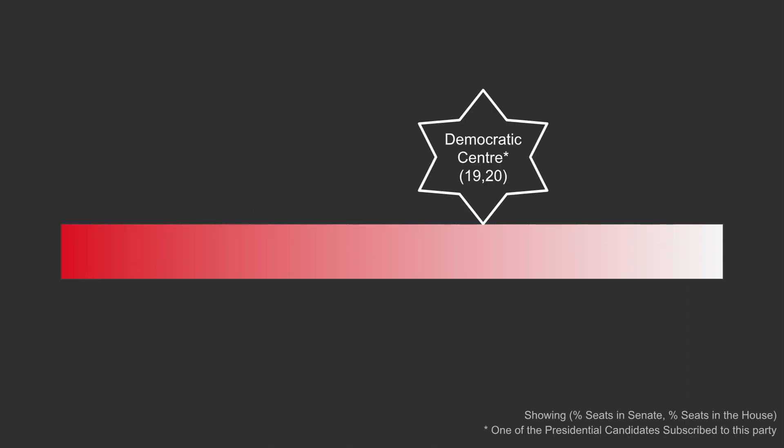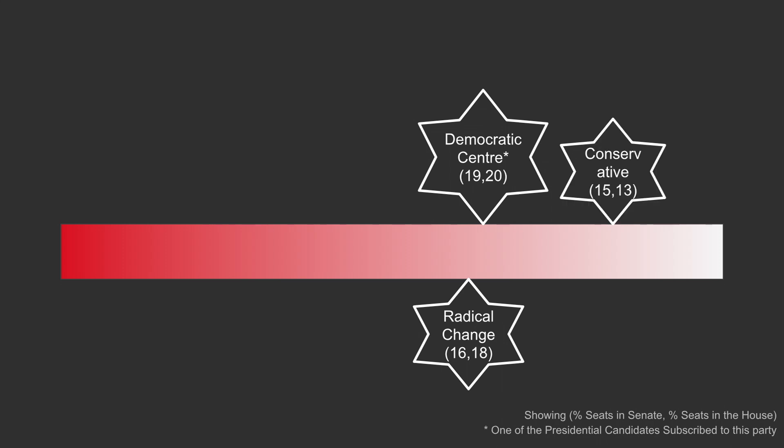Next, we move to party time, where we do it a little differently this time. Firstly, we talk about the Democratic Center on the center-right, with 19 seats out of 100 in the Senate. One of the two presidential candidates subscribes to this party. Then there's Radical Change with 16 seats — also a center-right party who broke away from a more leftist party, the Liberal Party. Next, we look at another right-wing party, the Conservative Party, a party with a lot of history that formally supports the free market along with traditionalism.